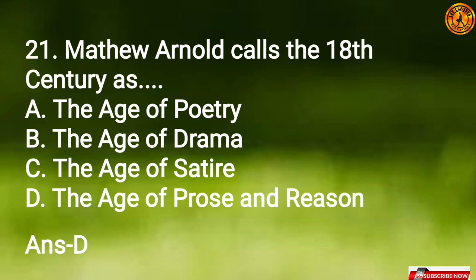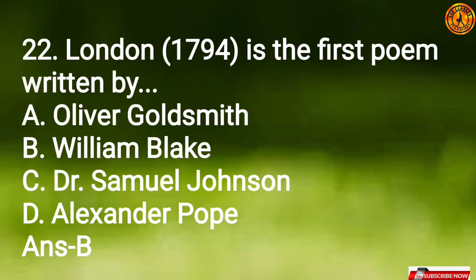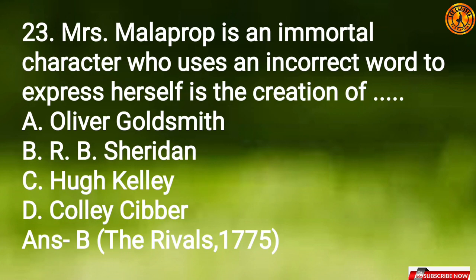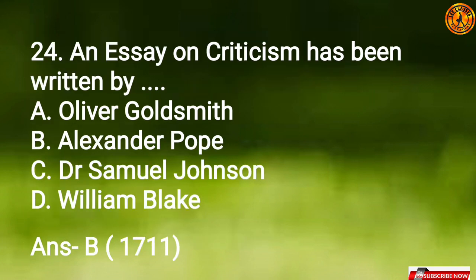Question 20: In the poem 'The Tiger,' Blake compares the creator to Option B, a blacksmith. Matthew Arnold calls the 18th century Option D, the Age of Prose and Reason. Question 22: 'London' is the first poem written by Option B, William Blake. Question 23: Mrs. Malaprop is an immortal character who uses an incorrect word to express herself — she is the creation of Option B, Richard Brinsley Sheridan, and is a character in 'The Rivals.'